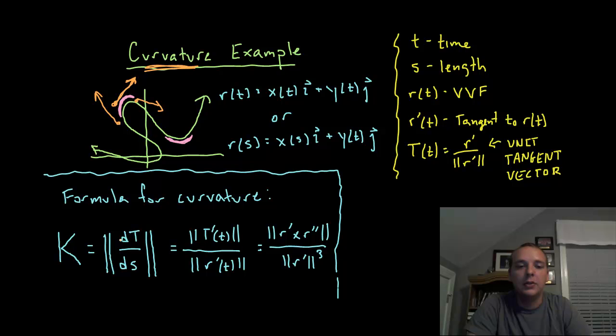If you just took dT/ds that would still be a vector valued function, it would still have i's, j's and k's in it. So we would take the norm of that when we're done. That gives you a numerical value for the curvature of a vector valued function.